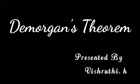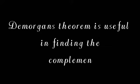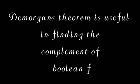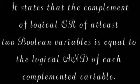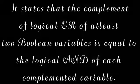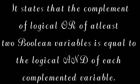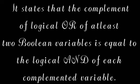Dear friends, let us discuss the topic De Morgan's theorem today. De Morgan's theorem is useful in finding the complement of a Boolean function. It states that the complement of logical OR of at least two Boolean variables is equal to the logical AND of each complemented variable.